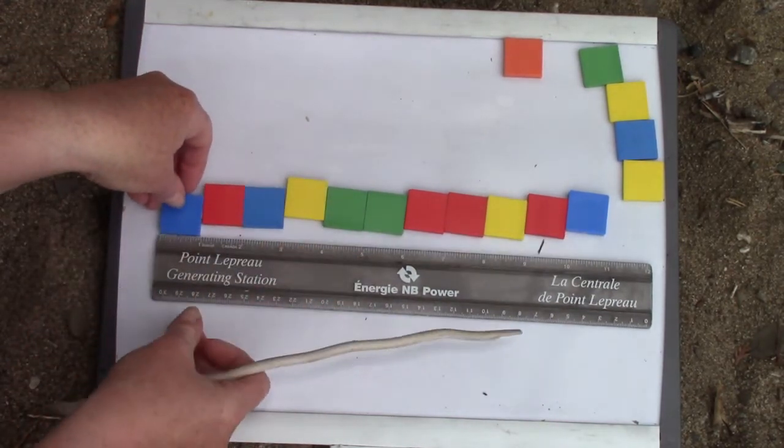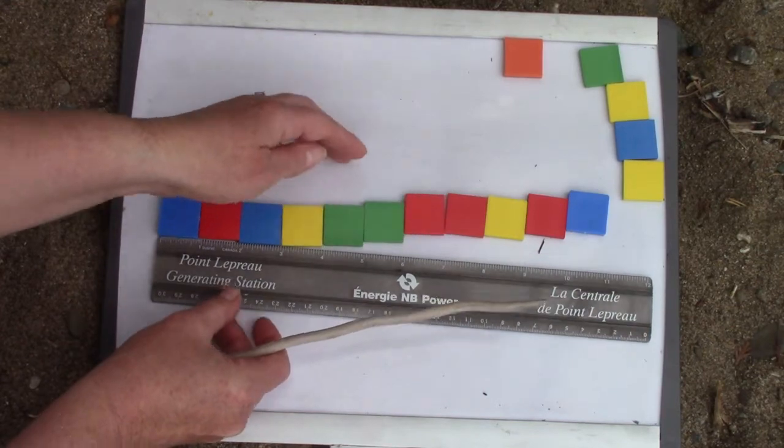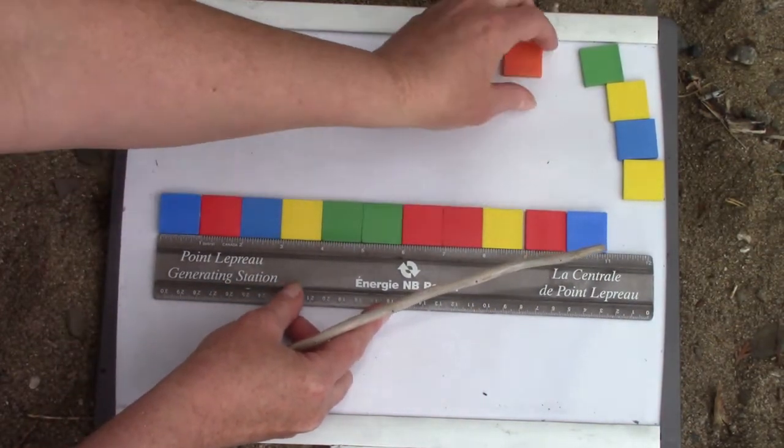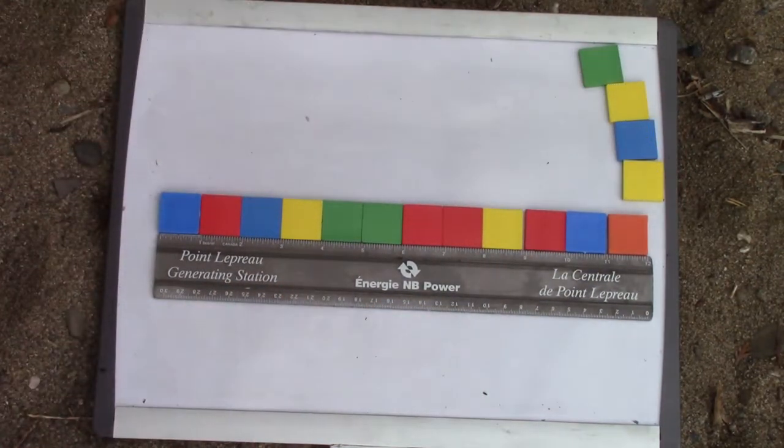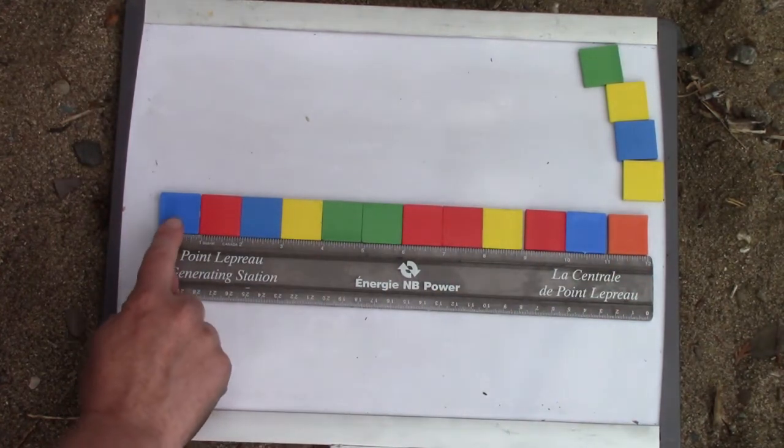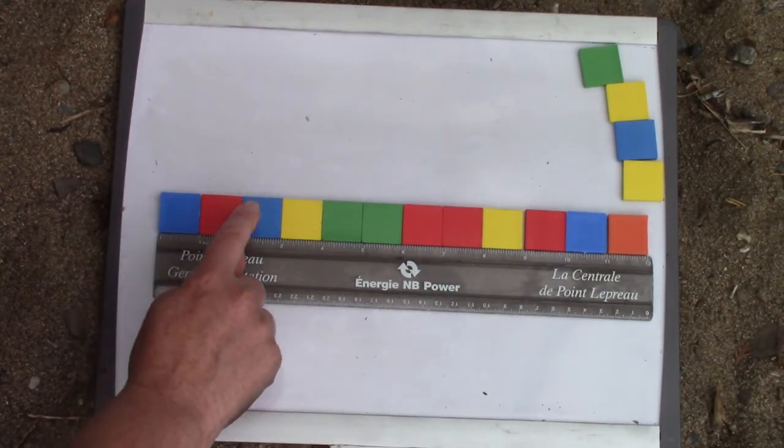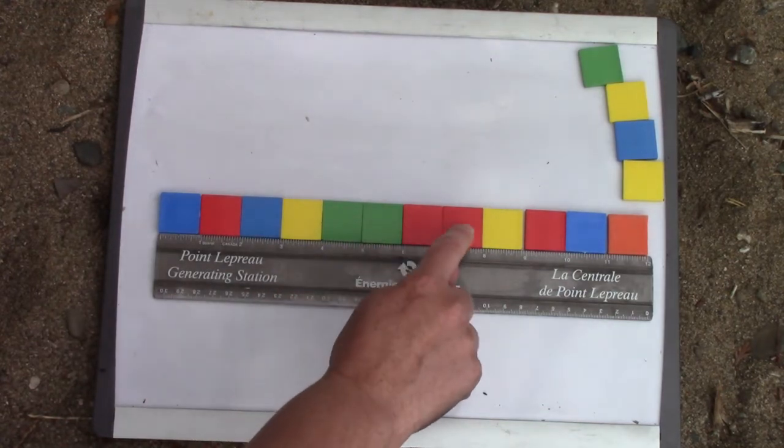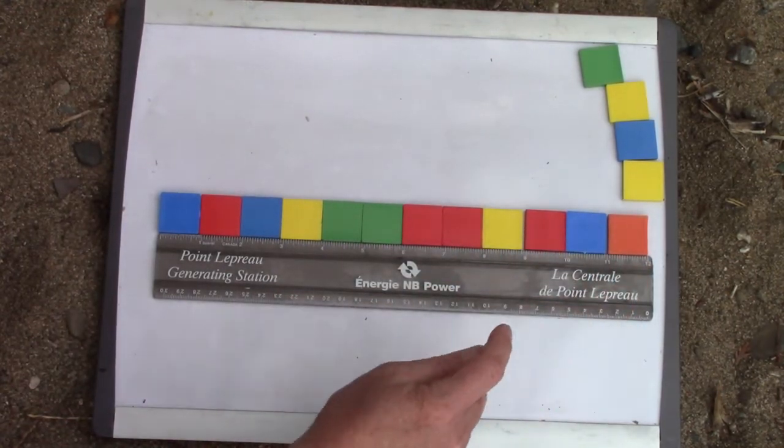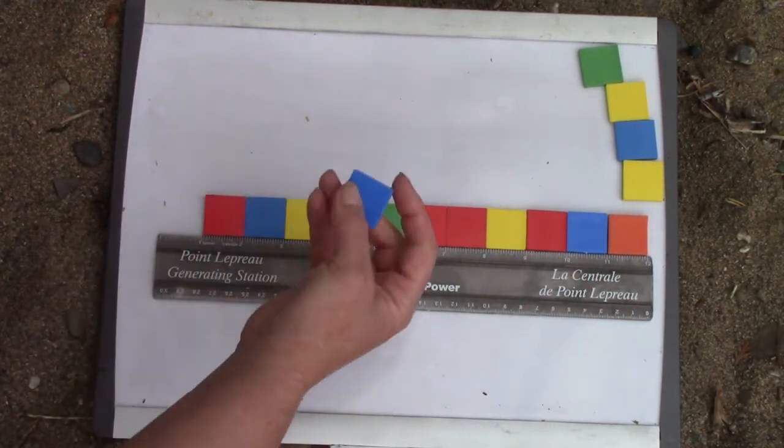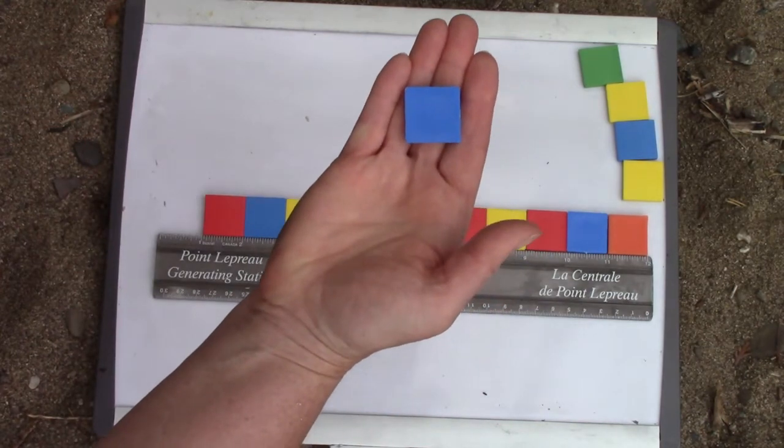That's because our tiles are one inch long. So our ruler measures 12 inches and that's how long our tiles are. One, two, three, four, five, six, seven, eight, nine, ten, eleven, twelve. An inch is about the same size as one of our tiles.